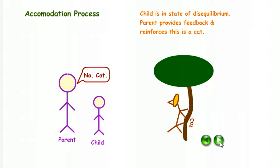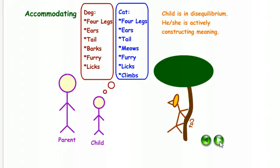No, replies the parent. Cat. So the child is in a state of disequilibrium. The parent provides feedback and reinforces, this is a cat. So now the child, this process of accommodation, creates a new schema.